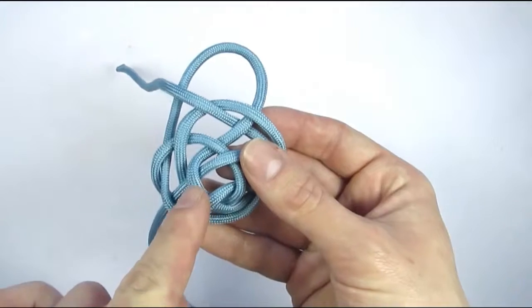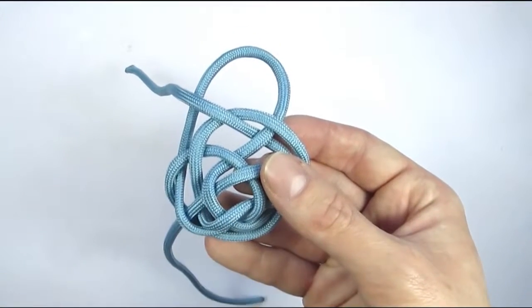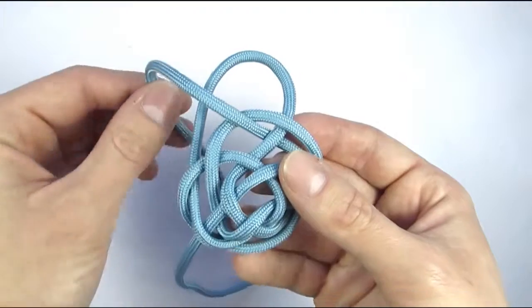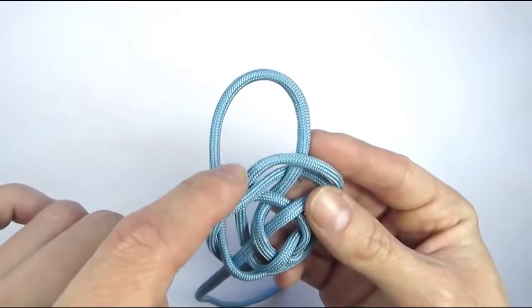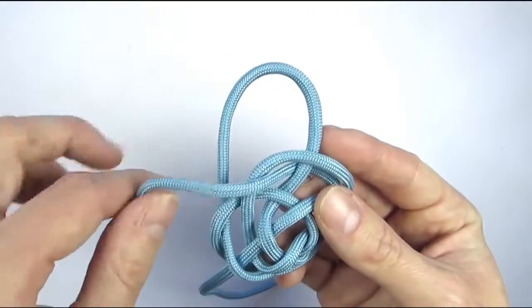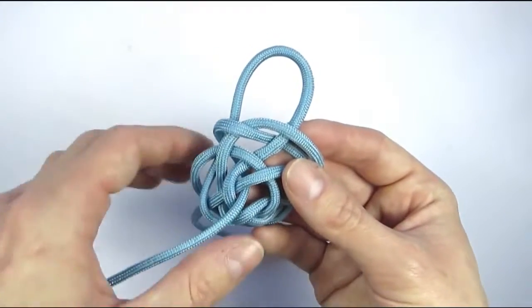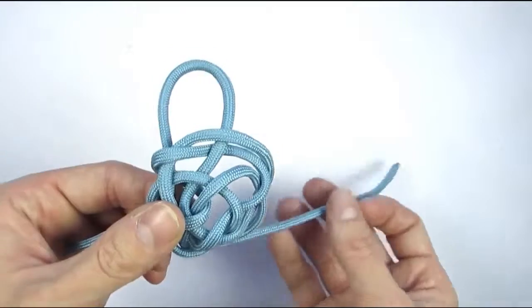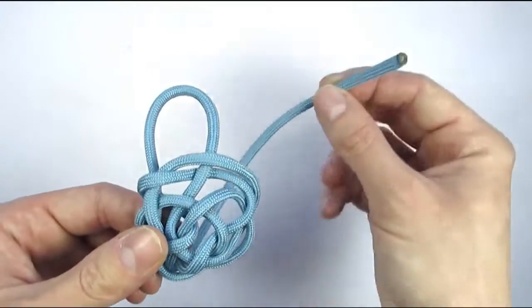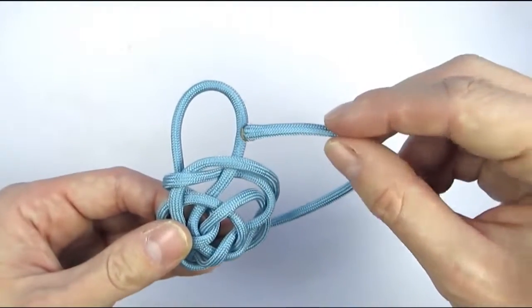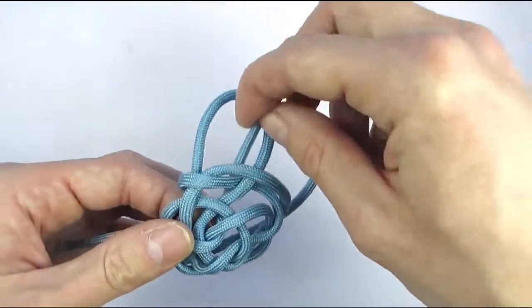We're going to take our cord, the top cord, and go past this cord on the left, under, and through the middle. With our bottom cord we're going to go past this right cord here and through the middle.